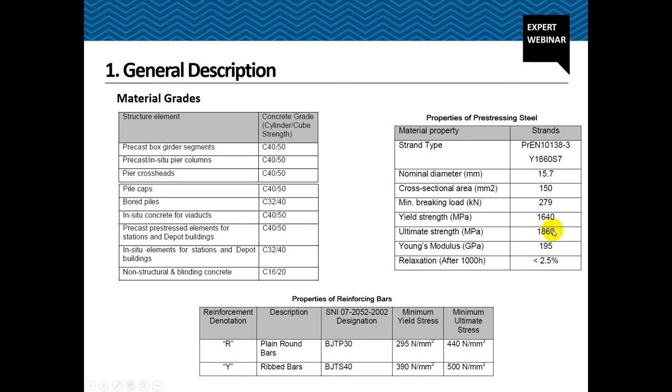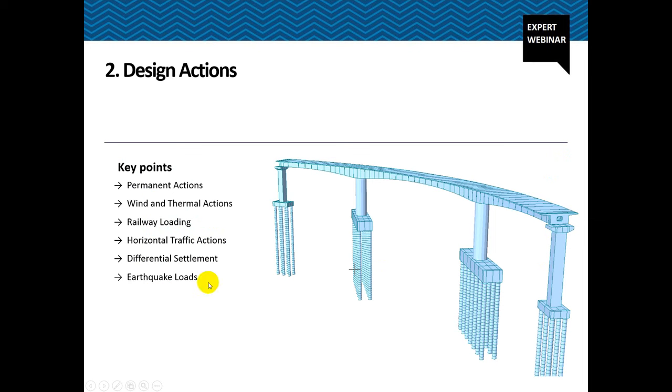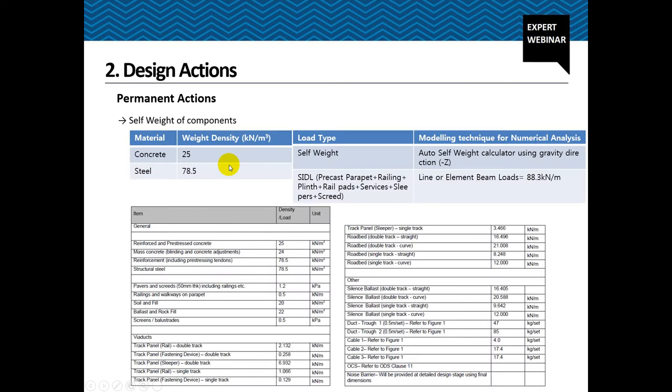Okay, now let's talk about the design actions that were considered in this design of the bridge. Permanent actions including self weight and SIDL. SIDL consists of a lot of components such as precast parapet, railings, plinth, sleepers for the tracks and drainage screed as well. So, in MIDAS, that is the numerical package that is used for the design of this bridge. These loads are all inputted in the form of line beam loads as the analysis type that we got.